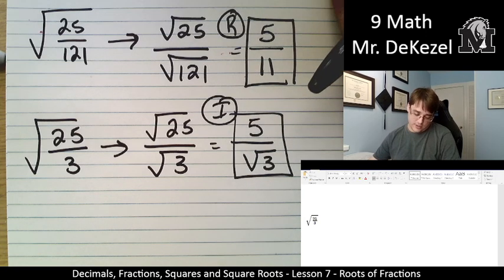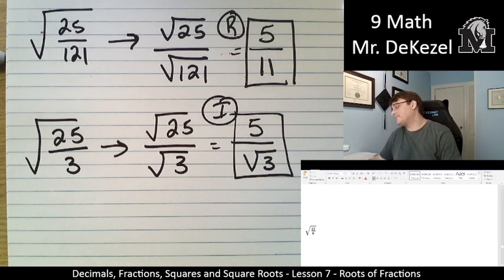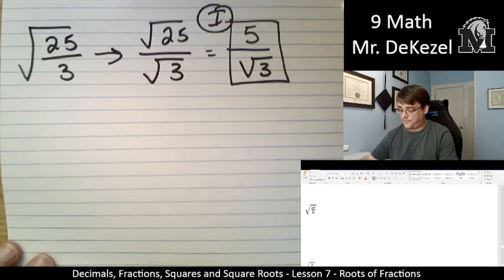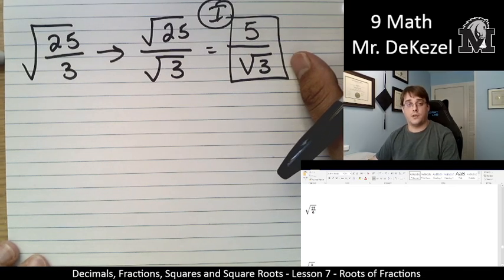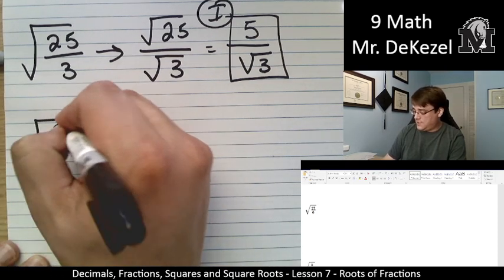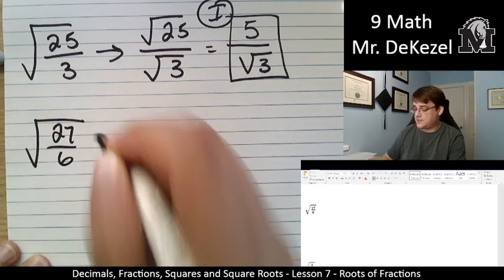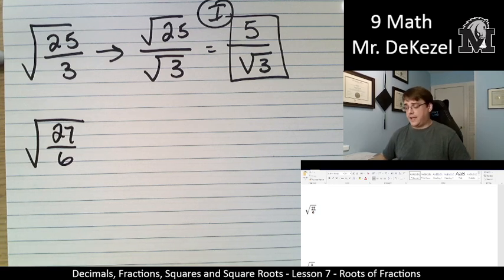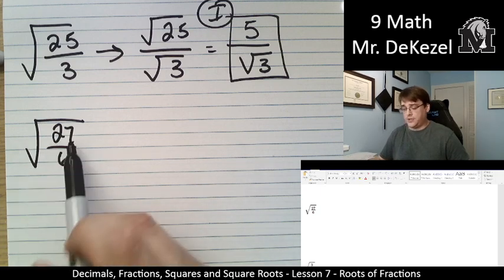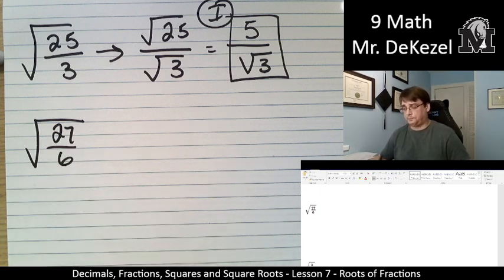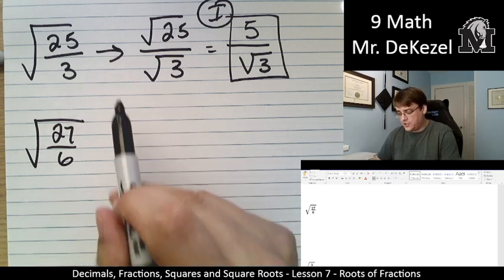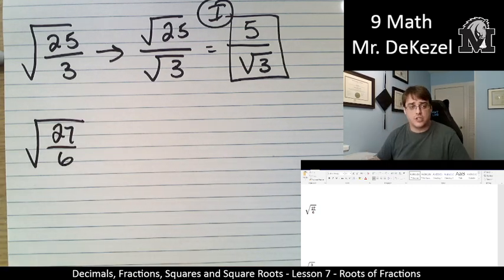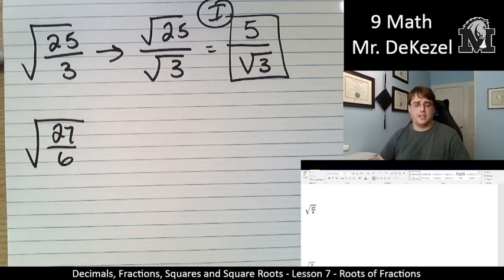Let's go to the next problem. 27 divided by 6. I'm going to shift this up. So, this is the root of 27 divided by 6. Now, I look at this one, and I don't know what the square root of 27 is, and I don't know what the square root of 6 is. So, breaking it up into the two pieces, like we did in the last two questions, is unfortunately not very helpful for us. What I want to look for in that situation is, can you reduce that fraction?